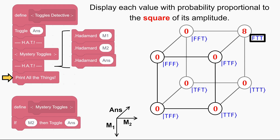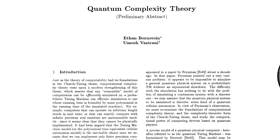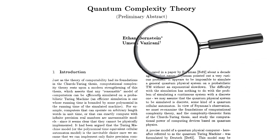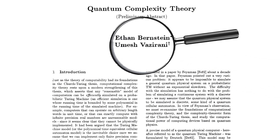Finally we come to the print instruction, where each possibility is displayed with probability proportional to the square of the amplitude. All squared amplitudes are zero except for false true true, which is 8 squared equals 64. So false true true is displayed with all of the probability. That's exactly revealing what's in mystery toggles — ants always comes out true, but the false and true corresponding to m1 and m2 reveal that m2 is inside mystery toggles and m1 is not.